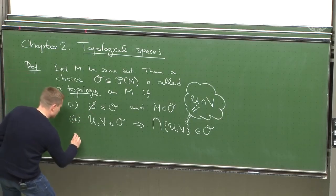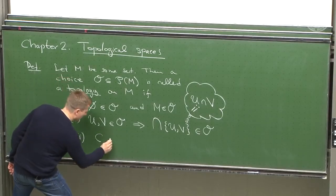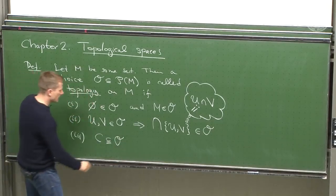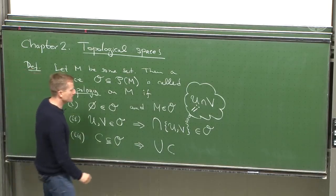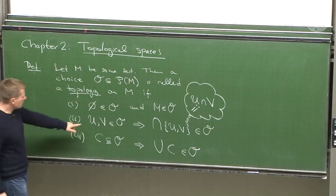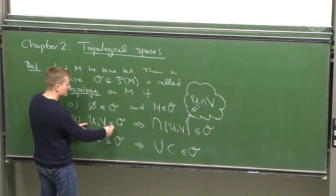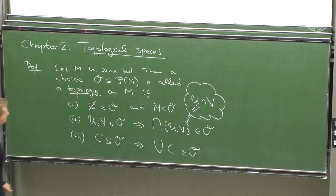And the third condition is: if you have an arbitrary collection of open sets — not just two, not just finite, but arbitrary — then the requirement is that the union of this arbitrary collection again lies in your pick of sets. So if these three conditions are met, then the choice you made is called a topology. That's it, that's all.